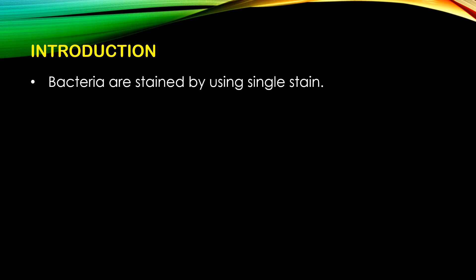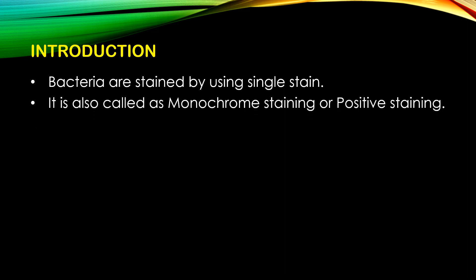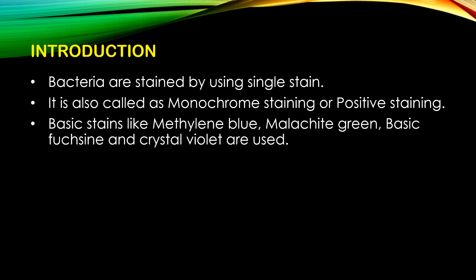Let's start with the introduction. Bacteria are stained using a single stain, so only one stain is used to stain the bacteria. It is also called monochrome staining or positive staining. Basic stains like methylene blue, malachite green, basic fuchsin, and crystal violet are used. There are three types of stains: acidic, basic, and neutral — in simple staining we use basic stains.